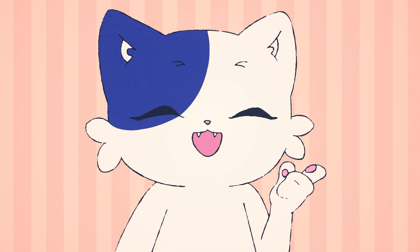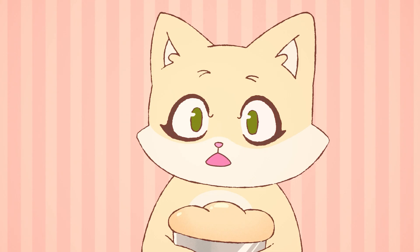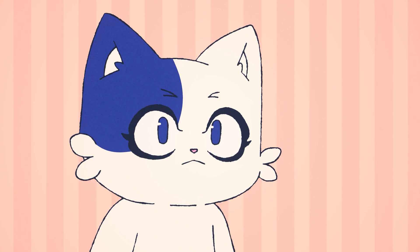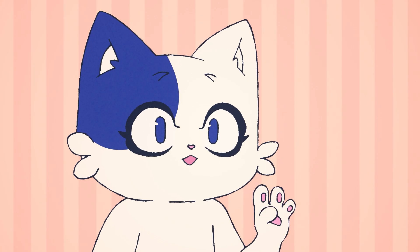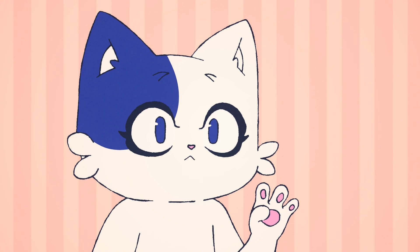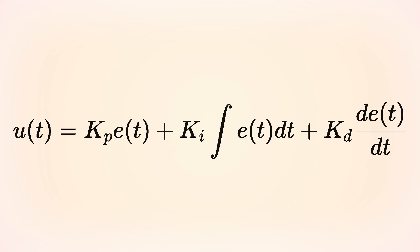I guess you can't use the same PID controller for all applications. No indeed — you have to modify the amount of each control action depending on the process you are controlling. You can do it through the three PID parameters: the proportional, integral, and derivative gains. The values have to be selected depending on the process and on the performance you want to achieve. This selection procedure is called tuning.